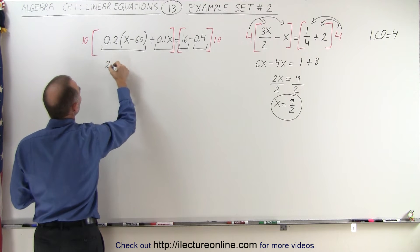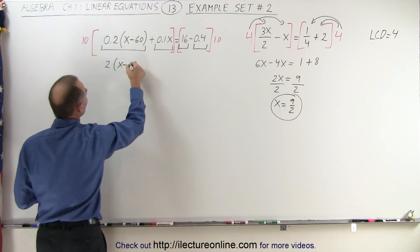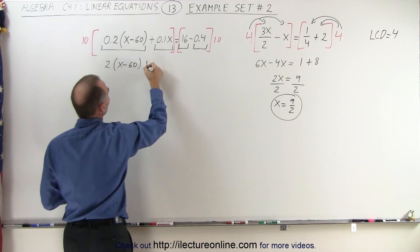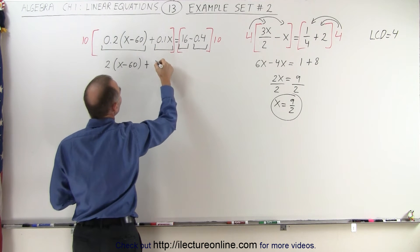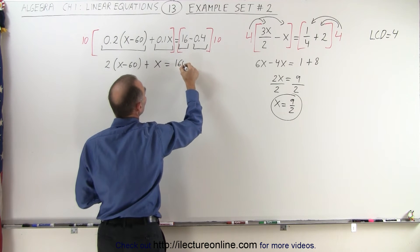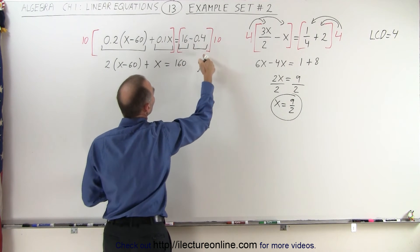Which means in this case, I end up with 2 times (x minus 60), because 0.2 is the factor of (x minus 60), plus 10 times this gives me simply x, equals 16 times 10 is 160, and 0.4 times 10 is 4 with a negative, makes it minus 4.